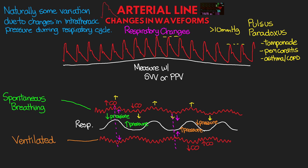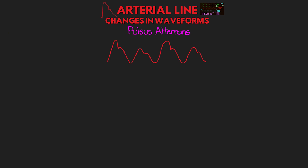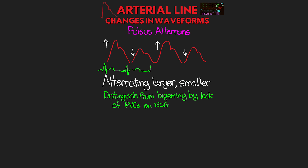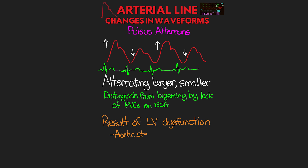The next abnormal waveform is something that we call pulsus alternans, characterized by alternating beats of larger and smaller pressures. We're going to distinguish this from bigeminy — which has the exact same appearance — by the lack of changes in our ECG tracing. Here you can see the normal ECG tracing throughout, yet we still have alternating beats on our pulse pressures. This is an abnormal change in our arterial line waveform that is the result of left ventricular dysfunction. This can be the result of aortic stenosis, heart failure, or even the impairment of anesthesia on the sympathetic nervous system for patients who have left ventricular dysfunction.